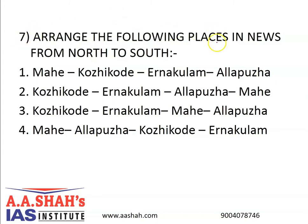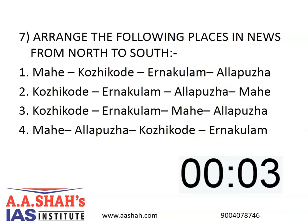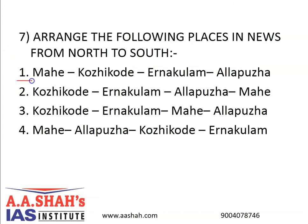Question number 7. Arrange the following places in news from north to south: Mahe, Kozhikode, Ernakulam, Alappuzha. The correct answer is 1: Mahe, Kozhikode, Ernakulam, Alappuzha. Mahe is a small town in the Mahe district of the Pondicherry Union Territory, situated at the mouth of the Mahe river and surrounded by the state of Kerala. The Kannur district surrounds Mahe on three sides and Kozhikode district from one side. Mahe has one representative in the Puducherry Legislative Assembly and Malayalam is the widely spoken language here.